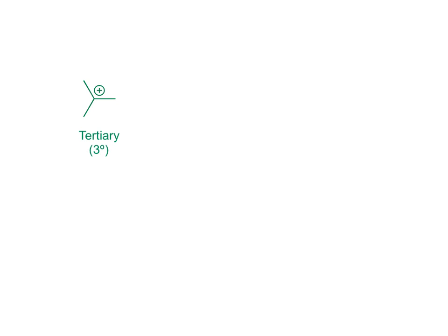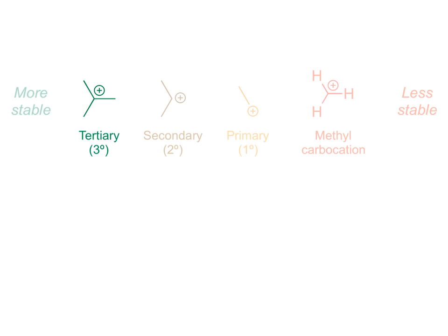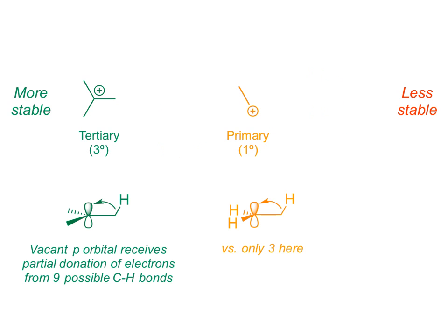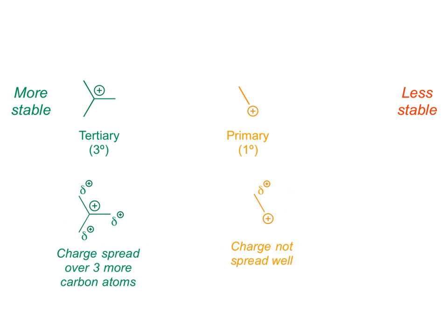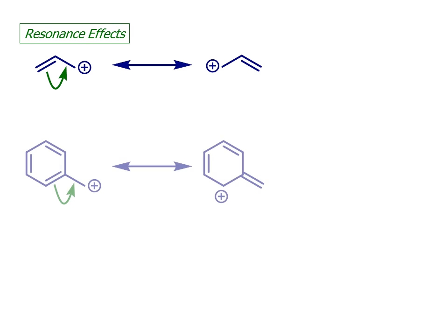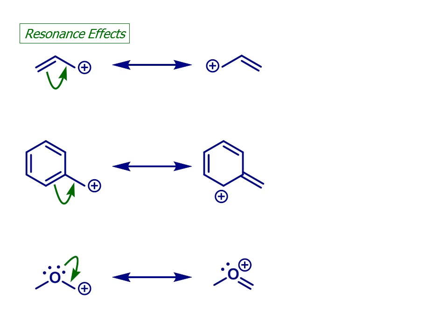We have previously learned that a tertiary carbocation is more stable than the corresponding primary or secondary species, because the presence of more C-H sigma bonds on the carbon next door to the positively charged centre means there is more capacity for hyperconjugation, which is a stabilising effect. Carbocations can also be stabilised by resonance from adjacent pi bonds, as in the allyl and benzylic systems, or from lone pairs on atoms such as nitrogen or oxygen adjacent to the positively charged carbon centre.